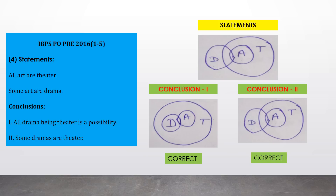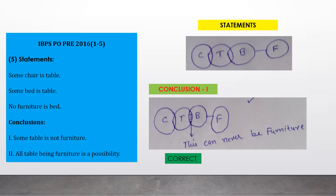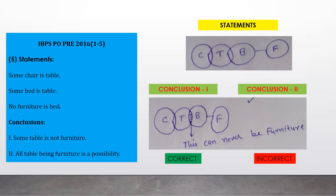Question 5 — Statements: some chairs are tables, some beds are tables, no bed is furniture. Conclusion one — 'some table is not furniture': the overlapping region between T and B cannot be furniture because no bed can be furniture, so this conclusion is always true. Conclusion two — 'all table being furniture is a possibility': this is incorrect, because some portion of T will always be inside B and that T cannot go inside F. So only conclusion one is correct. Answer: option A.